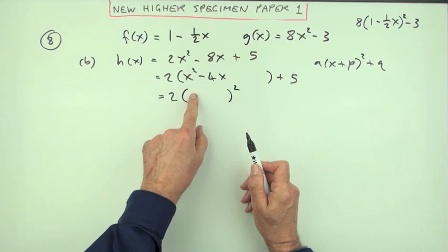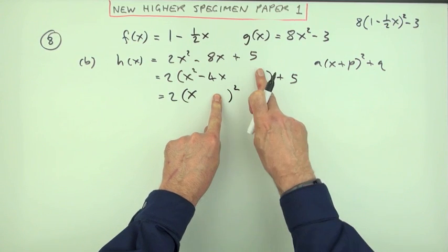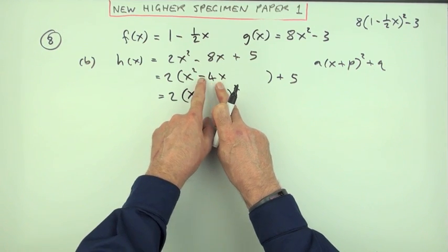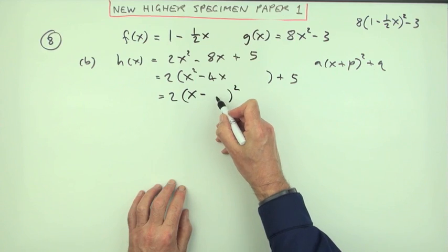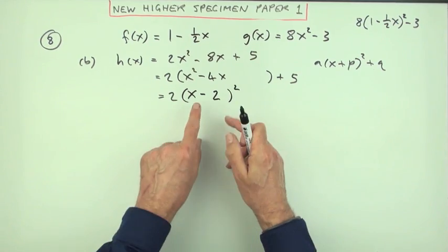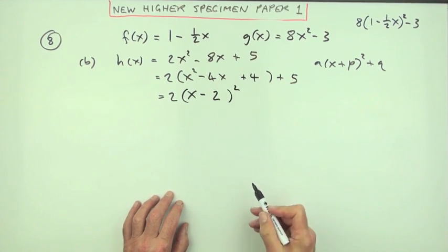So square the first produces x², so that must be an x. Square the last produces this—don't know it. But twice the product produces this, so it must be negative. And if you're doubling it to make a 4, that must be a 2.